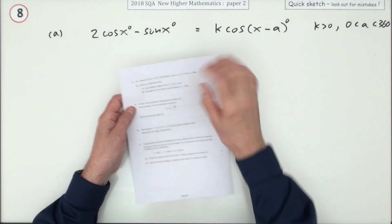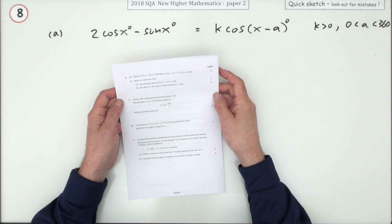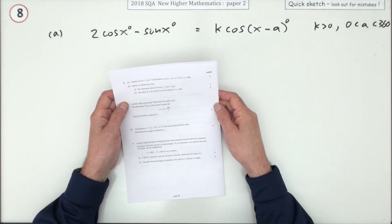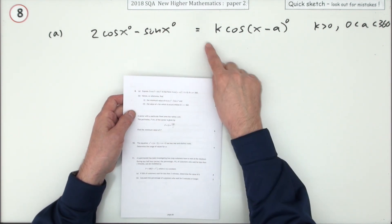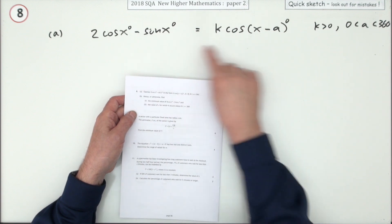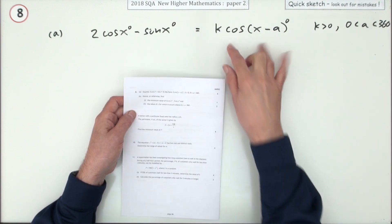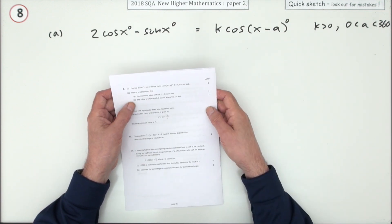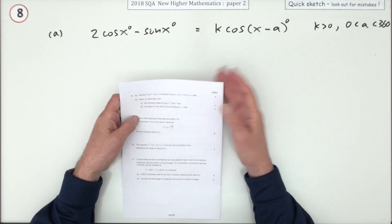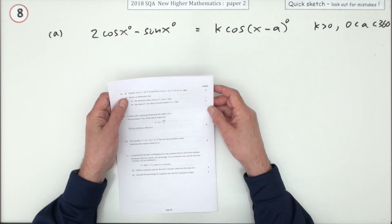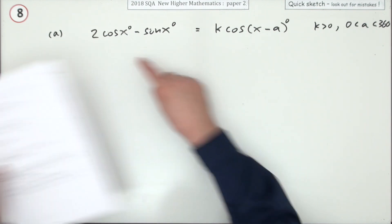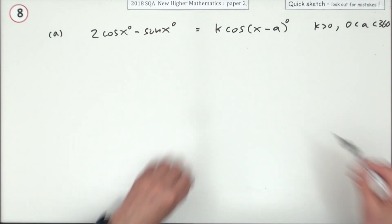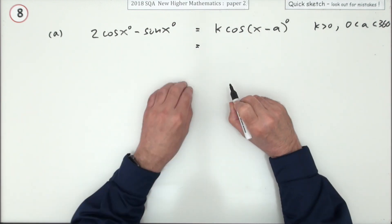Number eight from paper two of the 2018 Higher Maths. We have the equation and the usual two parts: first part, rewrite it in terms of a single trigonometrical term, and in the second part do something with it. For four marks, write this in the required form.